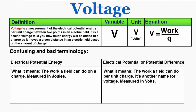Voltage has some of the most confusing terminology in physics. There are two phrases that sound very similar but are actually very different: electrical potential energy versus electrical potential. Electrical potential energy is different from electrical potential — we also call electrical potential the potential difference. Electrical potential energy means the work a field can do on a charge — the energy a section of the field adds to a charge — and it's measured in joules. Electrical potential, or potential difference, is the work the field can do per unit charge, which is just voltage, measured in volts.